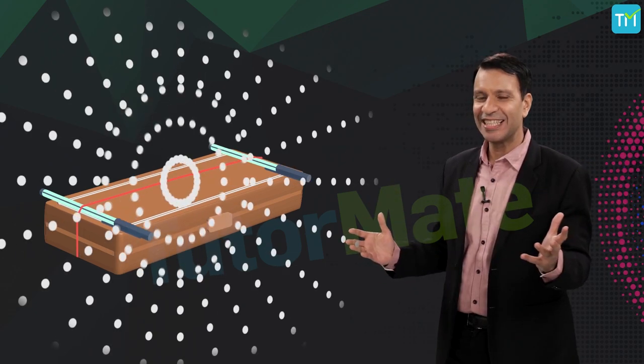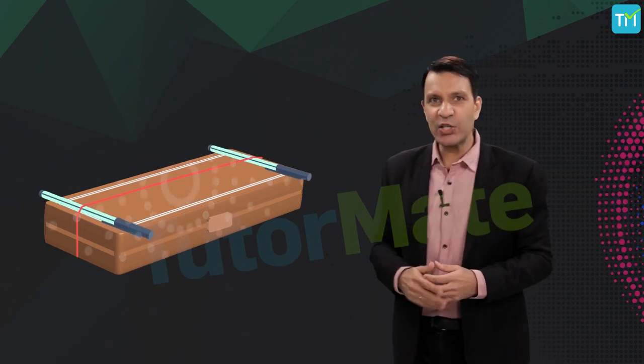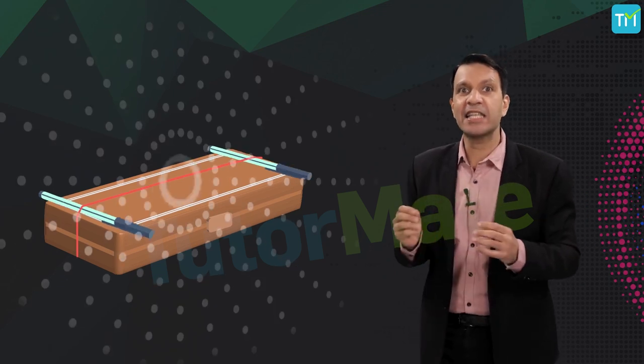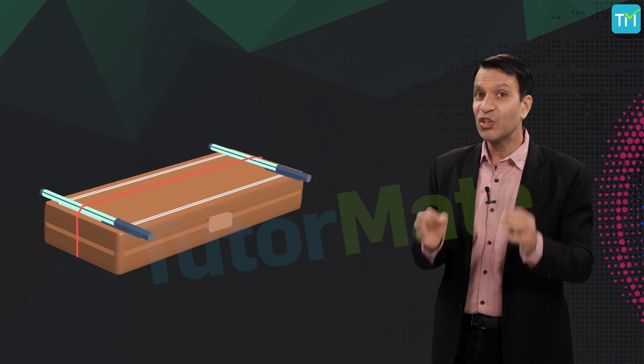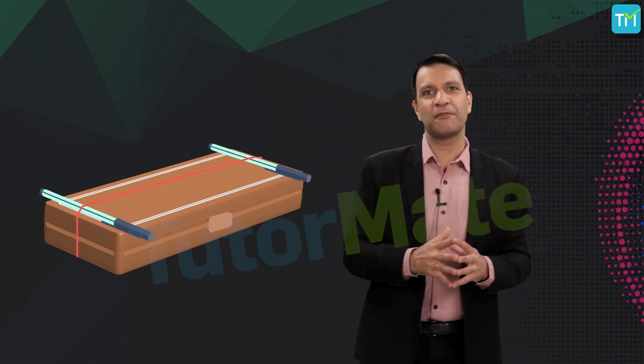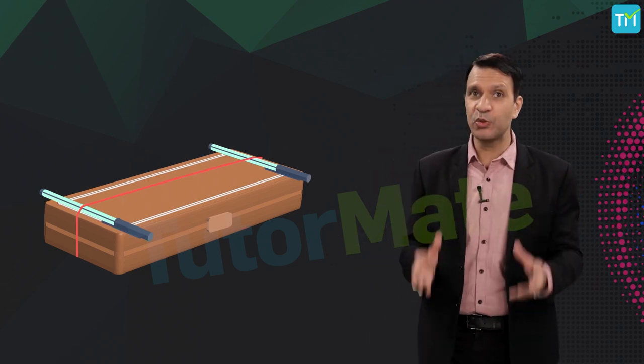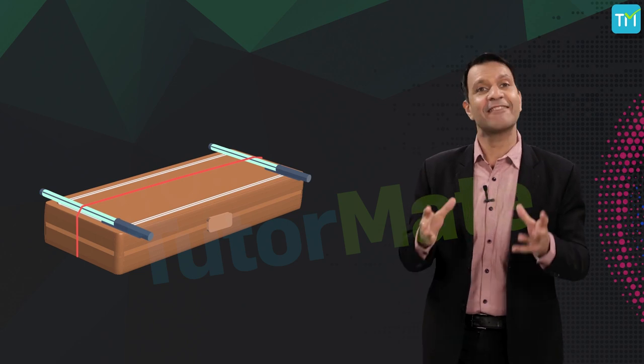Now, just pluck this rubber band at the middle and let it go. What do you see? You see that as you pluck the rubber band, it starts vibrating and produces a sound. This again confirms the fact that sound is produced due to objects that vibrate.